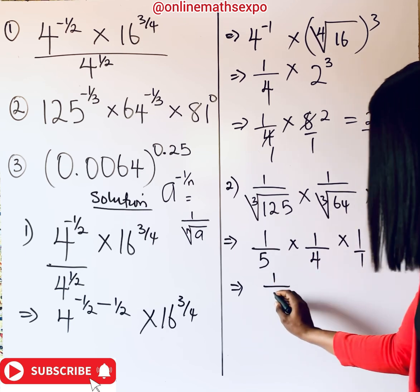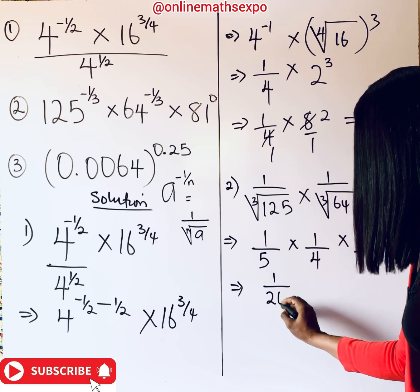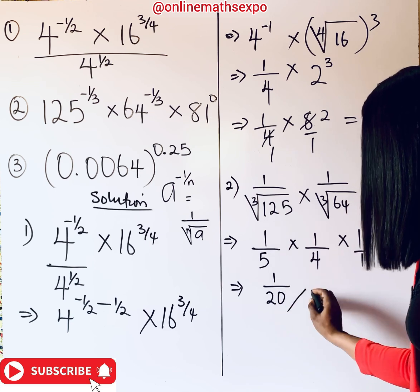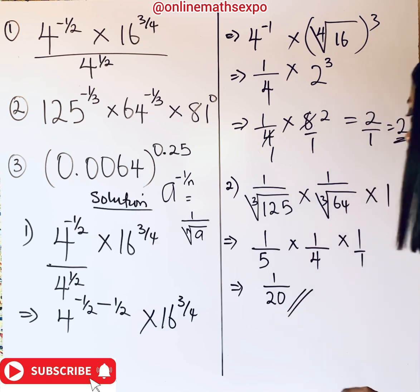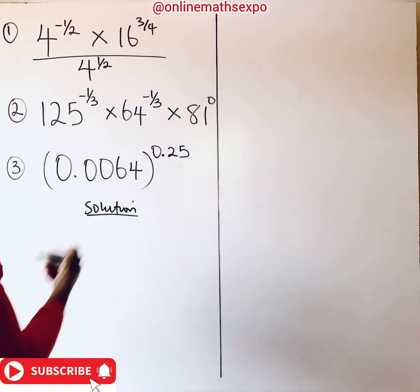So we have 1 over 5, multiplied by 1 over 4, multiplied by 1 over 1. That gives us 1 over 20. So our answer for question two is 1 over 20.